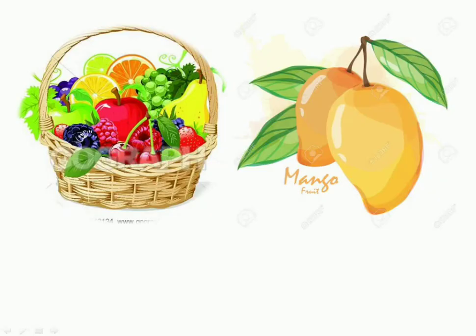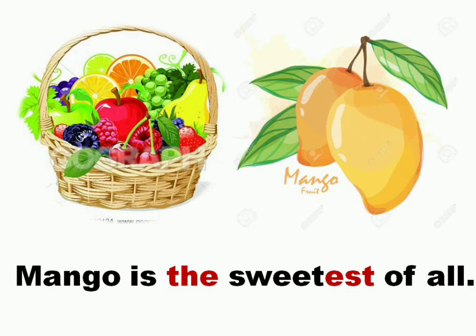For example, we are comparing mango with all the fruits here, so mango is the sweetest of all. To make the superlative degree, we added 'est' to 'sweet' and it became 'sweetest'. And before 'sweetest', we used the article 'the'.